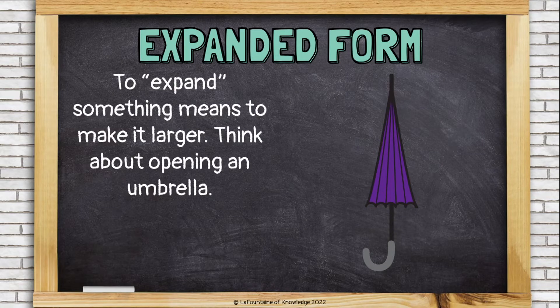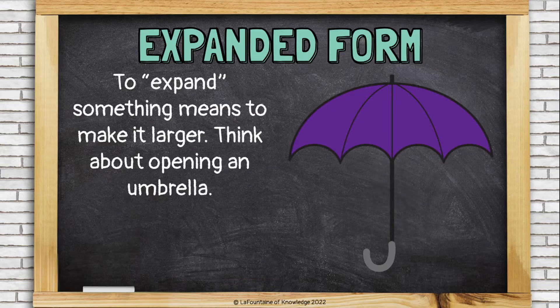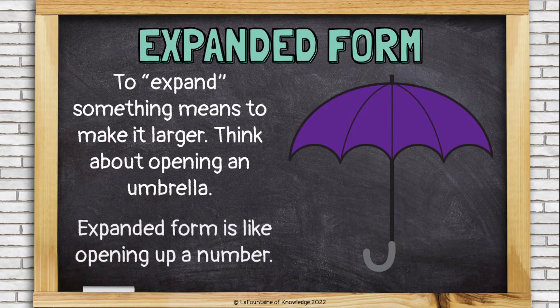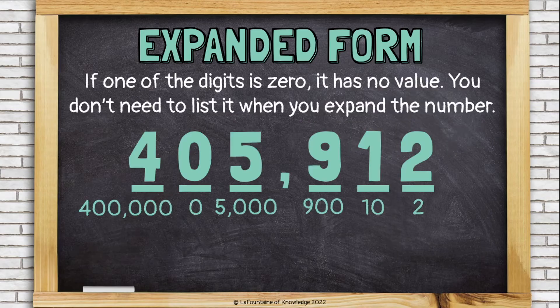To expand something means to make it larger. Think about opening an umbrella — expanded form is like opening up a number. If one of the digits in your number is 0, it has no value, so you don't need to list it when you expand the number.